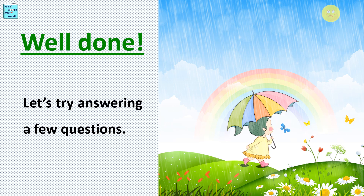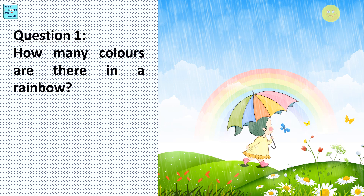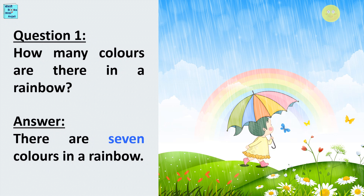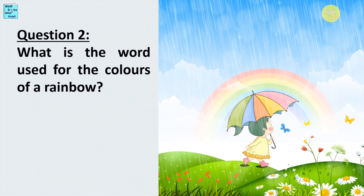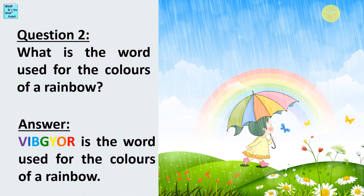Now try answering a few questions. Question 1: How many colors are there in a rainbow? Answer: There are 7 colors in a rainbow. Question 2: What is the word used for the colors of a rainbow? Answer: VIBGYOR is the word used for the colors of a rainbow.